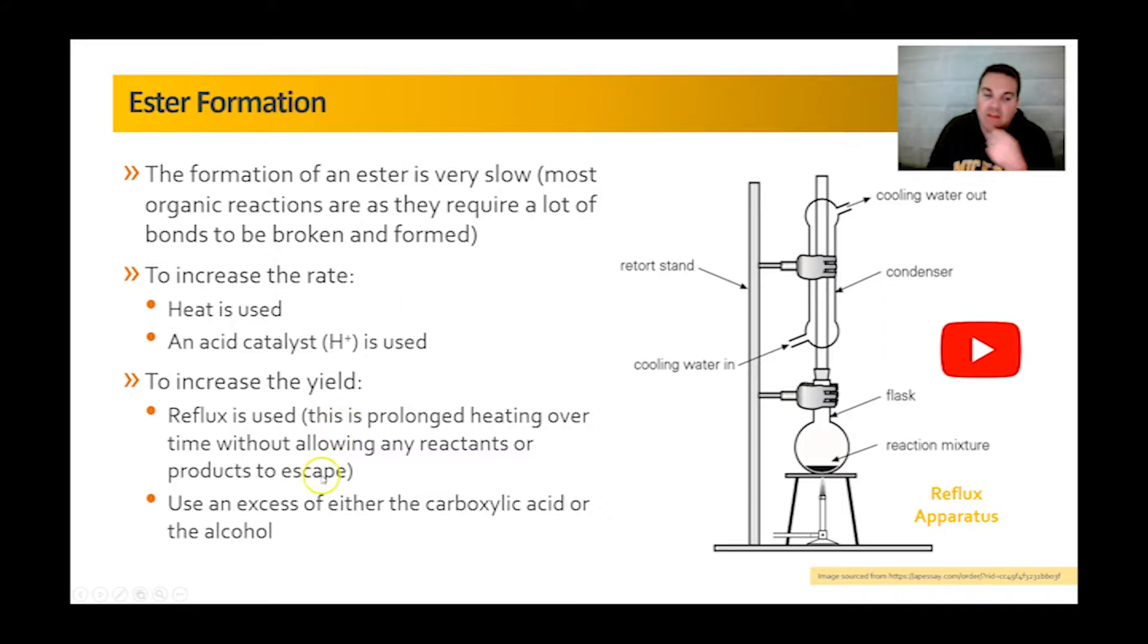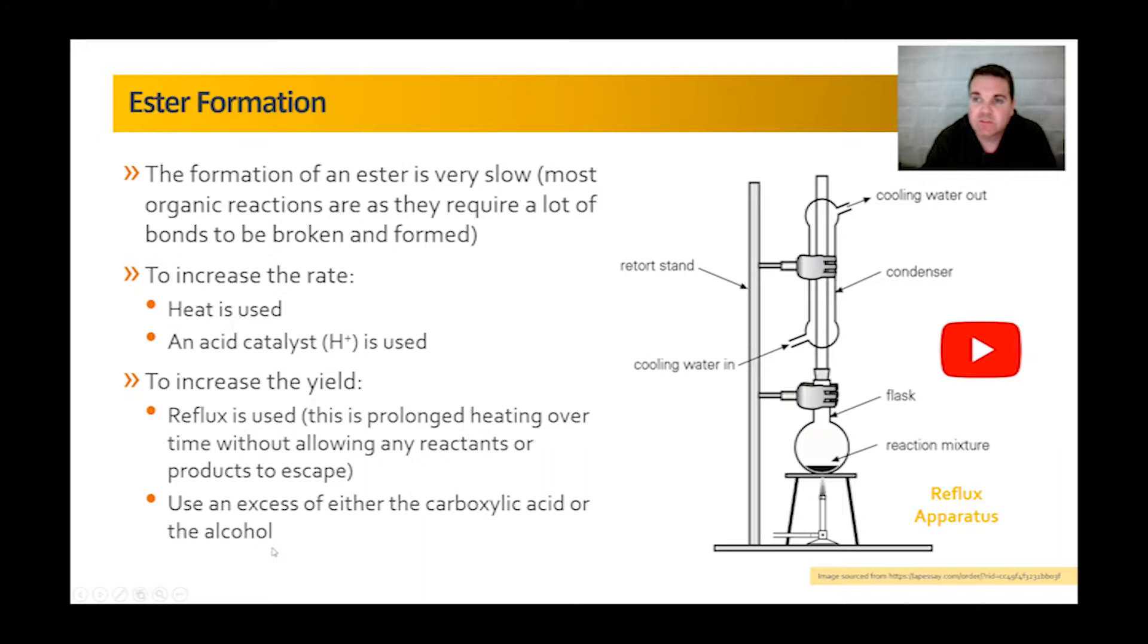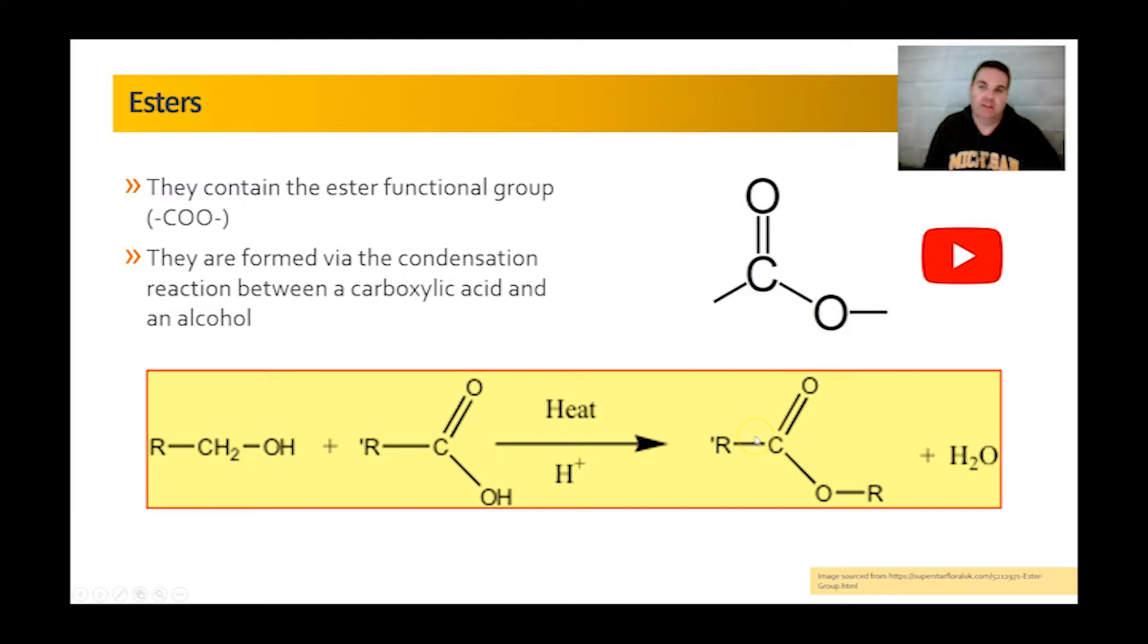So that is one way of getting an increased yield. And the other thing we generally tend to do is use an excess of either the carboxylic acid or the alcohol. Now it is an equilibrium. If we go back to this reaction here, I know there is a one way arrow but it is actually an equilibrium. And so if we use an excess of one of these according to Le Chatelier's principle, the equilibrium will shift to the right to counteract that increase in concentration, to decrease the excess we have. What that means is that the yield of the ester or the amount of ester we have increases. It is important that you understand these four things that we do to increase the rate and the yield of an ester.